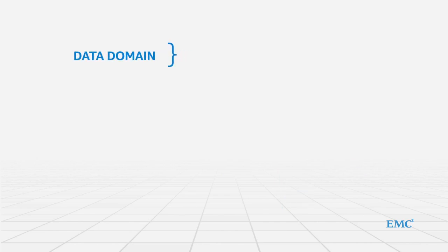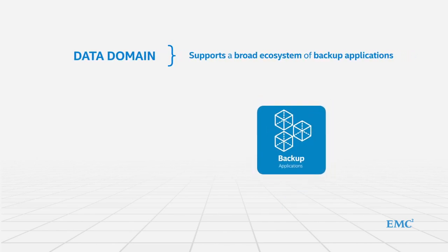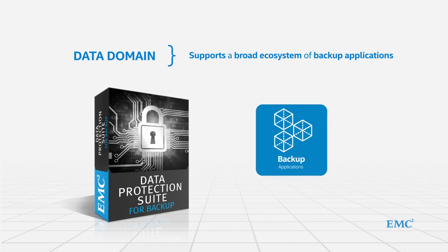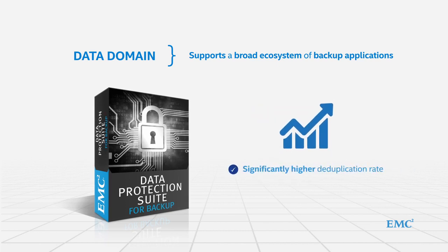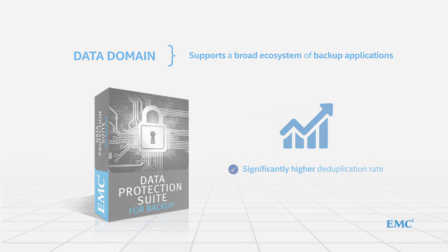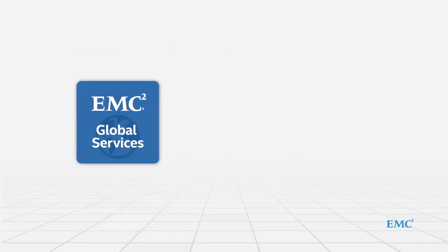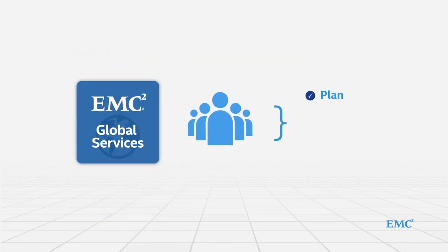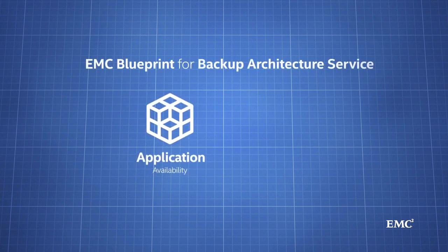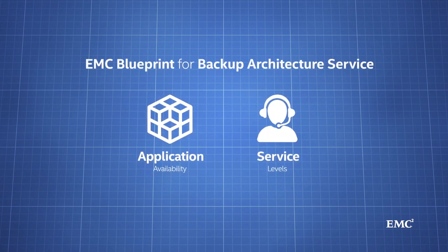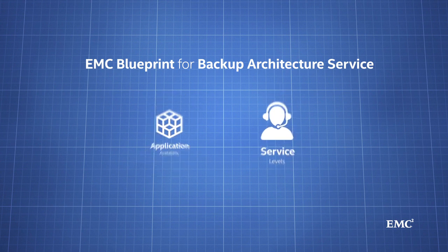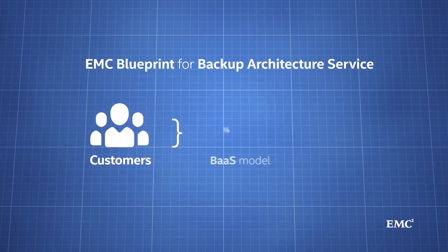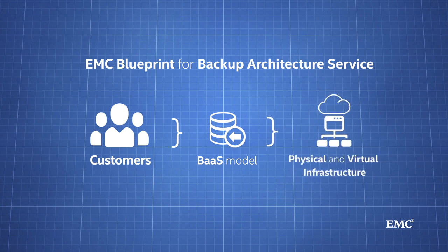While Data Domain can support a broad ecosystem of backup applications, by using the EMC Data Protection Suite, customers see significantly higher deduplication rates. EMC Global Services can help your customers plan, deploy, and optimize their backup and archive platforms. For example, the EMC Blueprint for Backup Architecture service can help improve application availability and service levels, while moving customers towards a Backup as a Service model for their physical and virtual infrastructure.